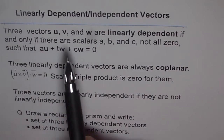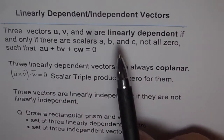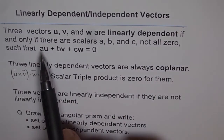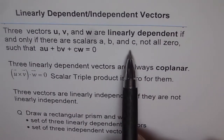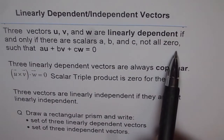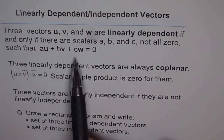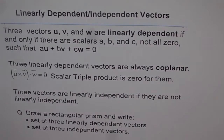When there are three vectors u, v, and w, we say that they are linearly dependent if and only if there are scalars a, b, and c, not all zero, such that au + bv + cw equals zero. That is the condition for three vectors to be linearly dependent.